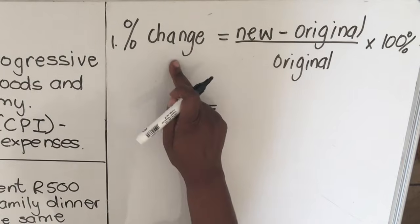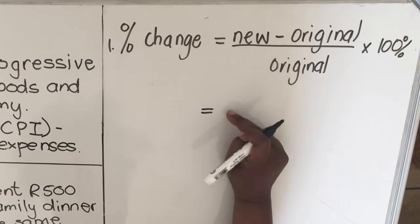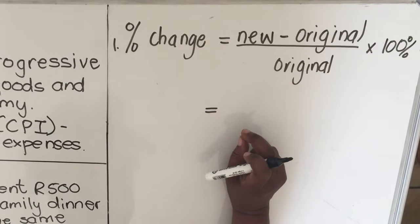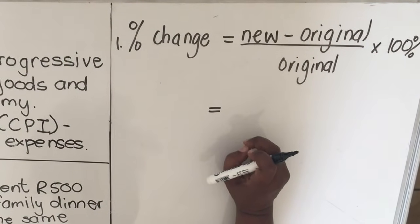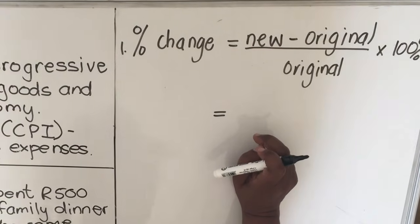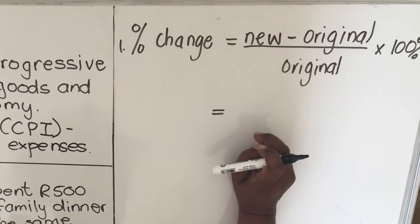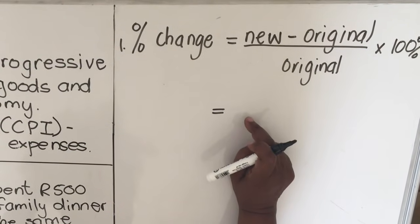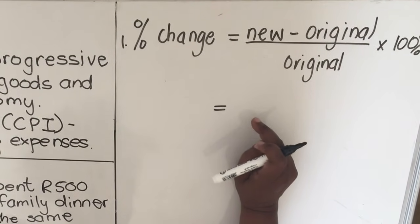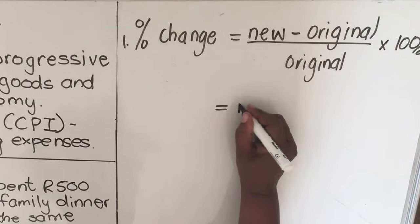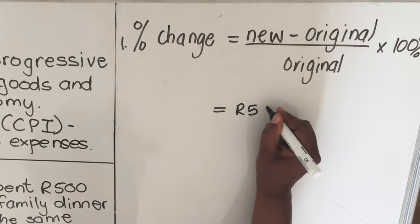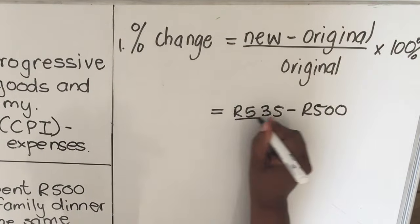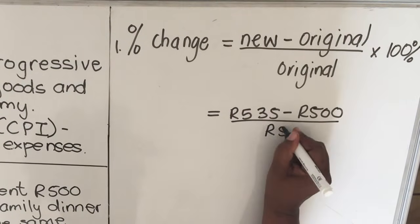Sometimes the answer will be positive when the price goes up, and negative when the price goes down. In this question, because it's inflation, the price goes up so we expect a positive answer. The new amount is 535, minus the original amount of 500, divided by the original amount of 500, multiplied by 100 percent.